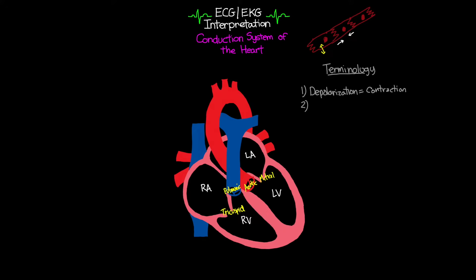The other bit of terminology is repolarization. After that action potential has happened, the ions have shifted and the cells have contracted. Eventually those ions start working their way back, the actin and myosin release, causing the cell to return to its original size — this is what we call relaxation. Just remember: depolarization means contraction is happening, and repolarization means relaxation is happening.